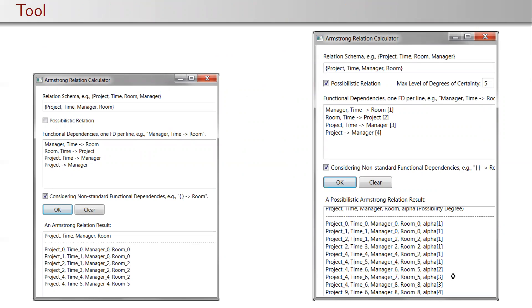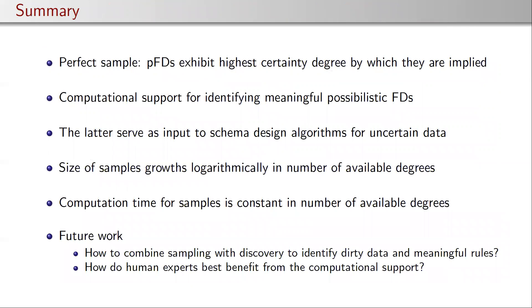As a summary: possibilistic Armstrong relations are perfect samples — they exhibit the possibilistic functional dependencies exactly to the highest certainty degree by which they are implied from a given input set. We offer computational support for identifying meaningful possibilistic functional dependencies that serve as input to schema design for uncertain data. On average, sample sizes grow logarithmically in the number of available uncertainty degrees, and computation times are constant in the number of these available degrees.